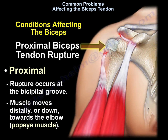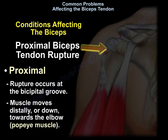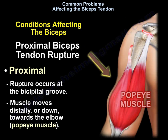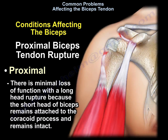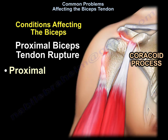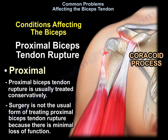Proximal biceps tendon rupture occurs at the bicipital groove. The biceps muscle moves distally towards the elbow, creating a Popeye deformity. There is minimal loss of function with a long head rupture because the short head of the biceps remains attached to the coracoid process and remains intact. Proximal biceps tendon rupture is usually treated conservatively, because there is minimal loss of function.